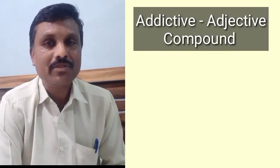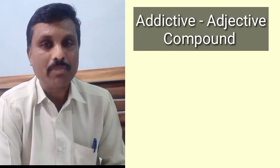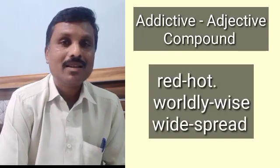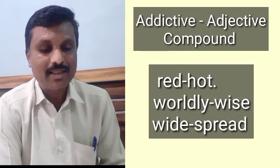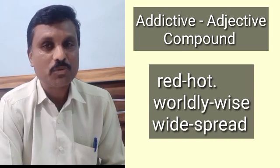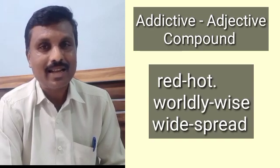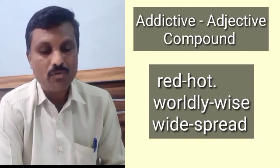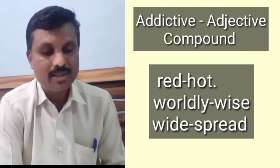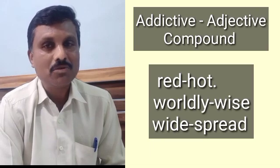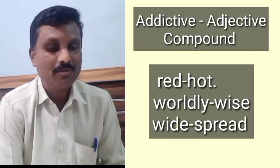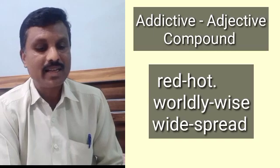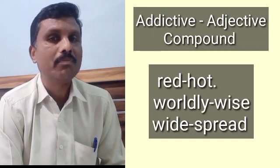The next type is the adjective-adjective compound, where two adjectives combine together. Examples include 'red hot', 'worldly wise', and 'wide spread'. 'Red' and 'hot' are both adjectives. 'Worldly' and 'wise' are both adjectives. 'Wide' and 'spread' are also both adjectives. These are all adjective-adjective compounds.